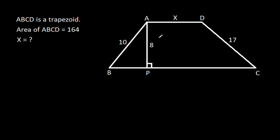In this video, we have been given that ABCD is a trapezoid and the area of ABCD is 164. We have to find X.